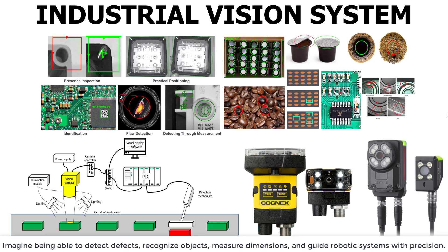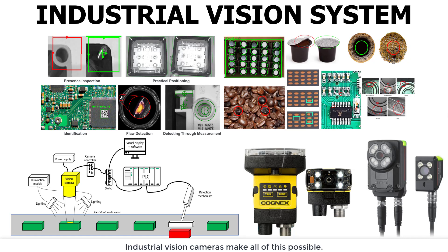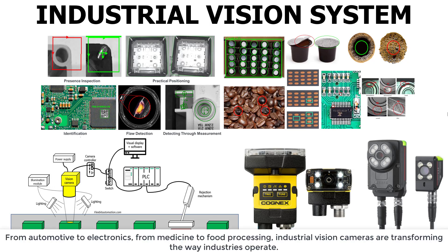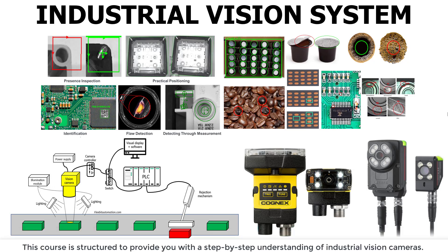Imagine being able to detect defects, recognize objects, measure dimensions, and guide robotic systems with precision — industrial vision cameras make all of this possible. From automotive to electronics, from medicine to food processing, industrial vision cameras are transforming the way industry operates.